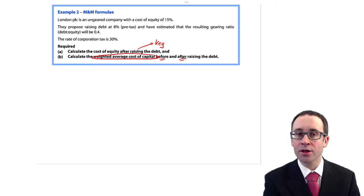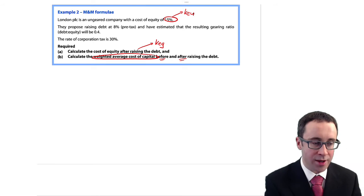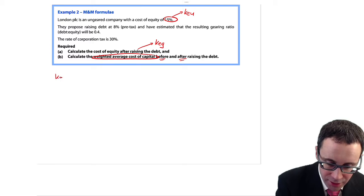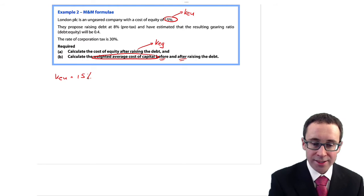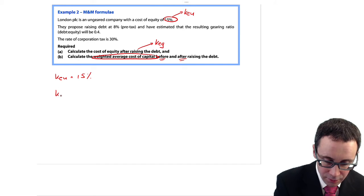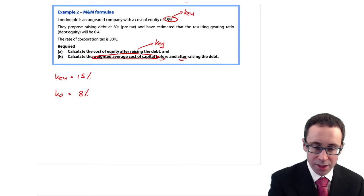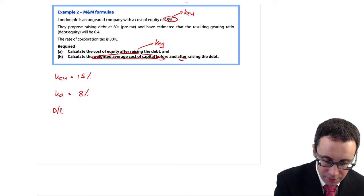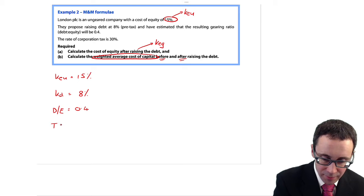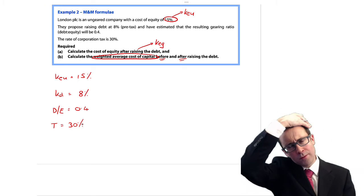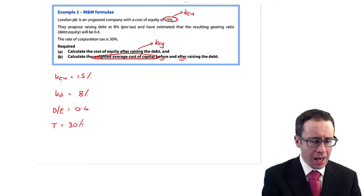The example for the M&M formula says in part A, calculate the cost of equity after raising the debt. So the cost of equity after raising the debt is that KEG. So if you've raised debt, it's for a geared company. And the cost of equity is KEG. And it wants us to work out the weighted average cost of capital before and after raising the debt. So make sure you read it carefully. It wants the WACC twice. So it says London PLC is an ungeared company. So that cost of equity at 15% is KEU.